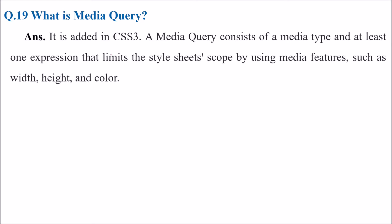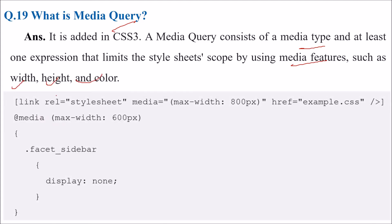What is media query? This is added in CSS3. A media query consists of a media name and at least one expression that limits the style sheet scope using media features like width and height. For example, at media max width 600px, the display will be none.